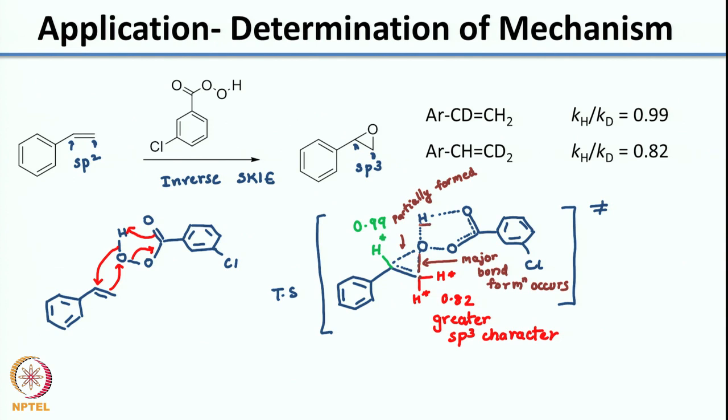As a homework, you can also think about what will happen if you do an isotopic substitution at the peroxy hydrogen. If you make an isotopic substitution at this hydrogen, what kind of an isotope effect would you see? Would it be primary, would it be secondary? What do you think would be the magnitude? You can have this discussion in the discussion forum.